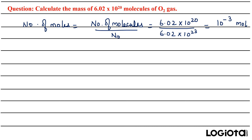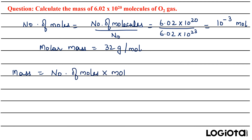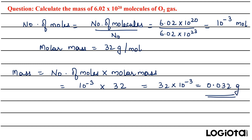Next, we need to calculate the mass. For that you should know the molar mass — the molar mass of oxygen gas is 32 grams per mole. So mass equals number of moles multiplied by molar mass: 10⁻³ × 32 grams per mole. After multiplying, you get 32 × 10⁻³, or 0.032 grams. This is the mass of these many molecules.